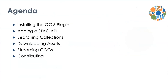Just a brief outline of what I'm going to cover: installing the QGIS plugin — it's really simple — adding your own STAC API, searching collections, doing any kind of spatial query, temporal query, all that, and then downloading assets. And if you have COGs, we'll cover streaming COGs. And lastly, how to contribute to the project if you're so inclined.